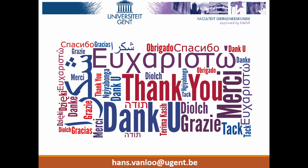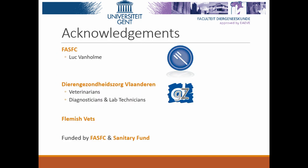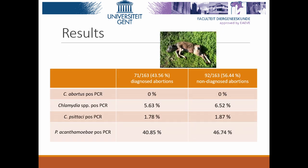Question from the chair: Was Parachlamydia detected in any cases where another agent was also detected — in association with another agent? Hans replied: Yes, we saw in the table that 40% of the diagnosed abortions were also positive for Parachlamydia, 5% for chlamydia species, and 1% for Chlamydia psittaci. So we found a lot of chlamydia and parachlamydia positive samples in the diagnosed population, which makes it difficult to say whether it is a primary pathogen or only important as a co-infection.